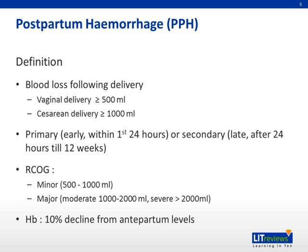We can define postpartum hemorrhage as blood loss following delivery. In terms of vaginal delivery, any blood loss more than 500 mL is considered PPH. And for caesarean deliveries, more than 1,000 mL is considered PPH. PPH can be divided into primary or secondary. Primary is defined as early onset, within the first 24 hours of delivery, and secondary can be defined as late, after 24 hours to 12 weeks postpartum.